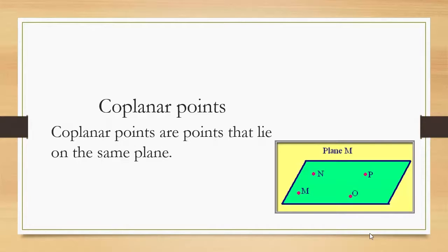Coplanar points. Coplanar points are points that lie on the same plane. So in plane M, points M, N, O, N, P are coplanar points as they lie inside the quadrilateral shape.